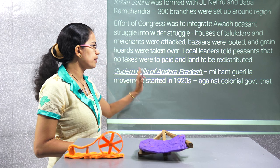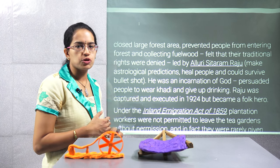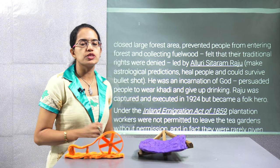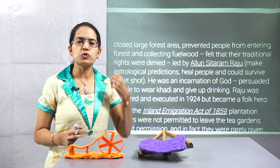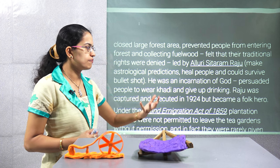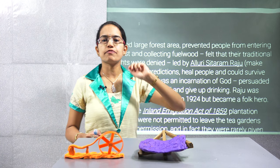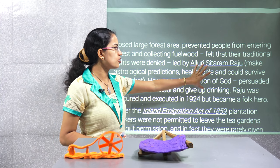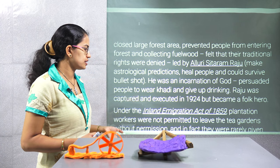Similarly, in Andhra Pradesh in the Gudem Hills, a militant guerrilla movement started in the 1920s. That was again an anti-colonial government movement, led by Sitaram Raju. Sitaram Raju was very popular among people — he was considered a man who could make predictions, tell the future, heal people, and survive even if shot. He was greatly respected. Though he was later executed, he ultimately became a folk hero of that region.